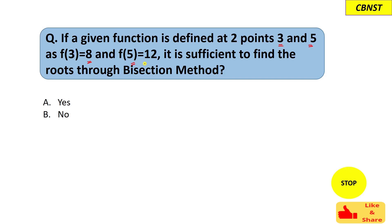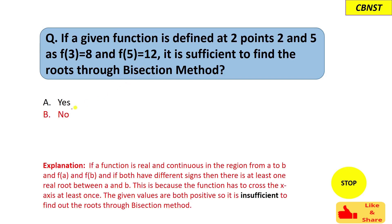So the correct answer for this question is option B, that means no, we cannot find the root using the bisection method using these points. Actually here you can see both these function values f(3) and f(5) are positive values.